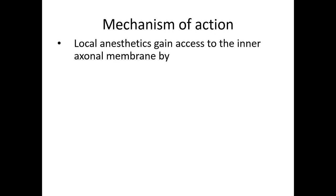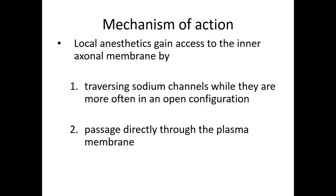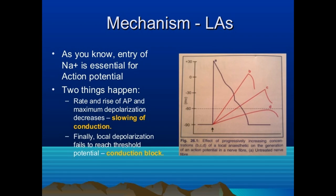Local anesthetics gain access to the inner axonal membrane by two pathways: by traversing sodium channels when they are in the open configuration, and by passing directly through the plasma membrane - the hydrophobic pathway. Entry of sodium is essential for action potential. When local anesthetics bind to the sodium channel, the rate of rise of action potential and maximum depolarization decrease, causing slowing of conduction. Finally, this local depolarization fails to reach threshold potential, resulting in complete conduction block.